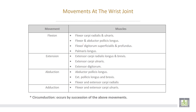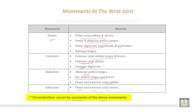Movements at the wrist: flexion is produced by flexor carpi radialis and ulnaris, flexor pollicis longus, flexor digitorum superficialis and profundus, and palmaris longus. Extension is by extensor carpi radialis longus and brevis, extensor carpi ulnaris, and extensor digitorum. Abduction by abductor pollicis longus and extensor pollicis longus and brevis, in addition to flexor and extensor carpi radialis. Adduction by flexor and extensor carpi ulnaris. Circumduction occurs by succession of the above movements.